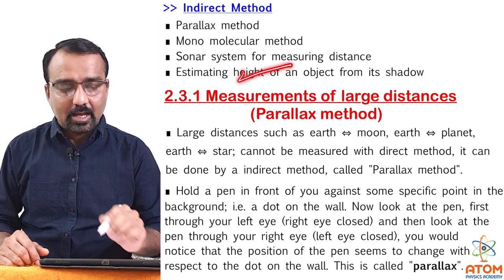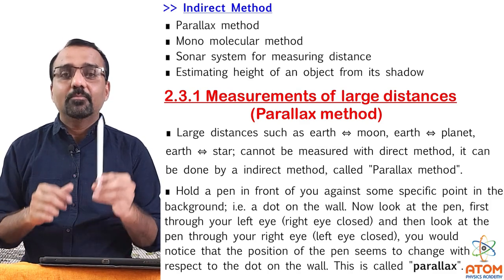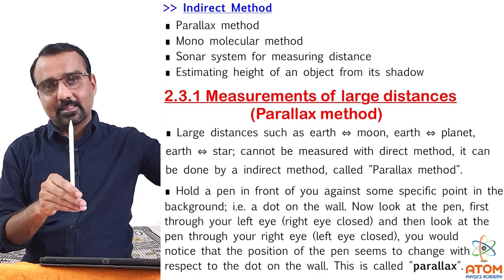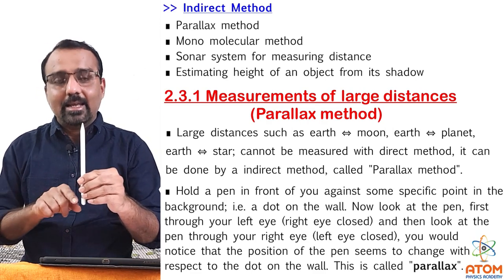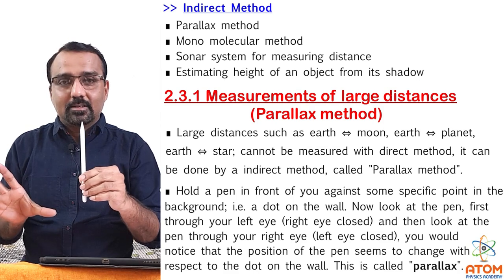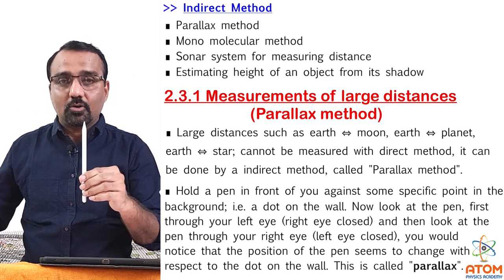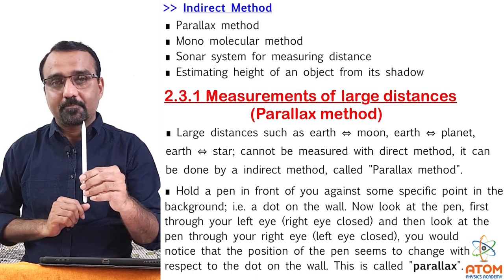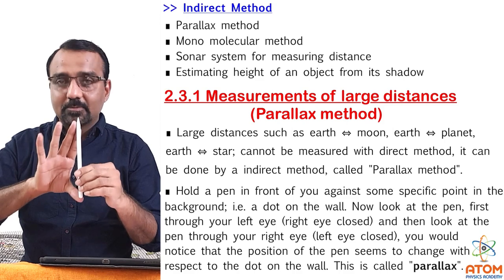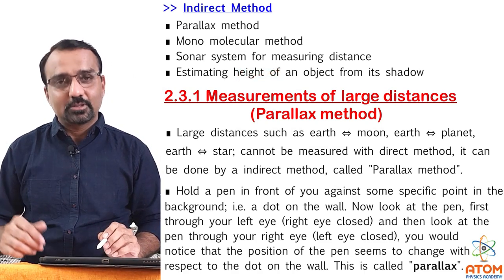Then there is estimating the height of an object from its shadow — this we do in our day-to-day life also. For example, if a pen is standing somewhere in daylight and you can see a shadow, and the light is producing a shadow of two feet, then from that you know the length of the pen. Now, if any object at the same time and place has a shadow of double the length, then obviously the height of that object will be double that of the pen. So this is what estimating height of an object from shadow means. These are some examples of indirect methods.